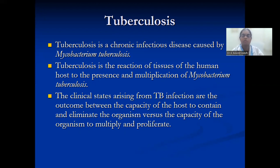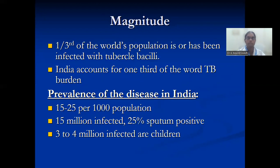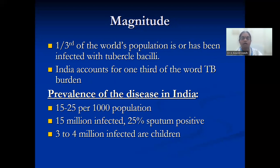If the host has some problem like an immunocompromised state, steroid intake, or some reason they are not able to eliminate, then the disease manifests. Coming to the magnitude of tuberculosis infection, one third of the world's population is infected with tuberculosis. India accounts for around one third of the world's TB burden.